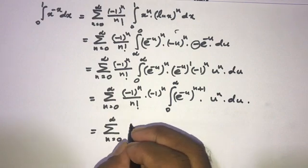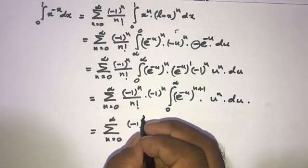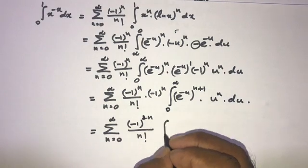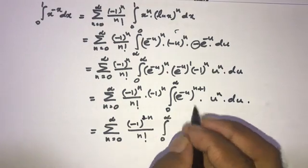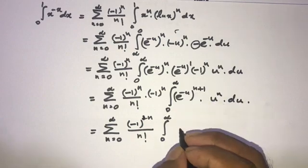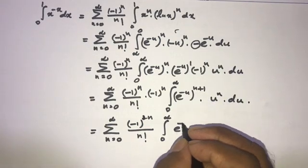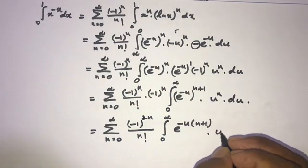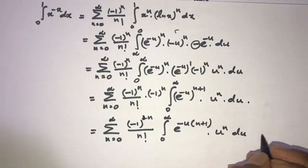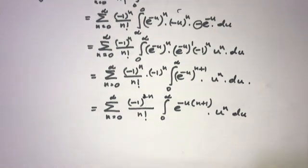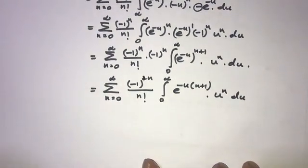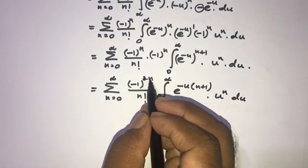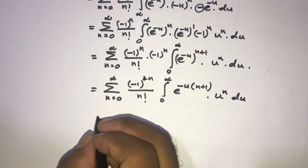Here we have (-1)^n times (-1)^n, which equals (-1)^(2n), and this equals 1. So the expression simplifies to the sum from 0 to infinity of 1 over n factorial, times the integral from 0 to infinity of e^(-u(n+1)) times u^n du.